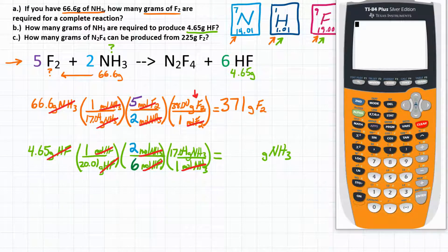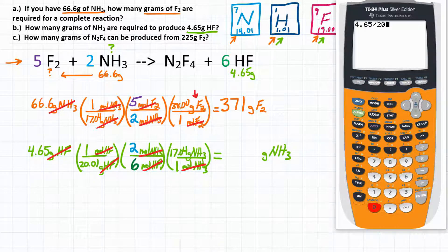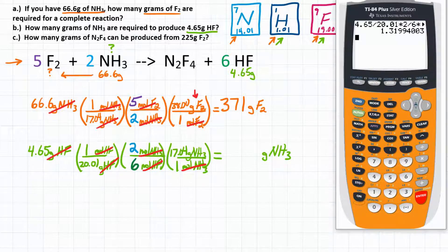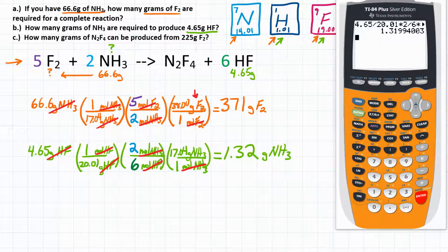In your calculator: start with 4.65, divide by 20.01, multiply by 2, divide by 6, then multiply by 17.04. That gives 1.31994, which we round to 1.32 grams. So 1.32 grams of NH3 is our final answer for part B.